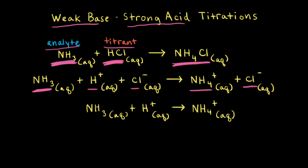To write the net ionic equation, we leave out spectator ions. Since chloride anions appear on both the left and right sides, they are the spectator ions. Leaving those out, we get the net ionic equation: NH3 + H+ → NH4+. This is the net ionic equation for this weak base/strong acid titration.